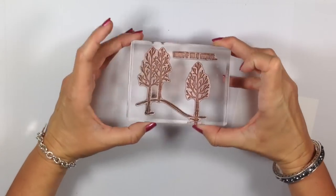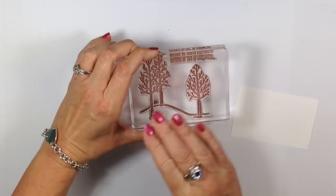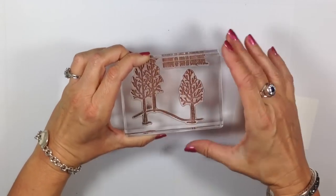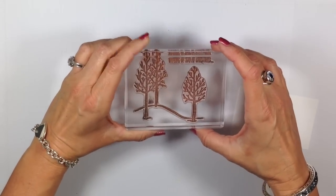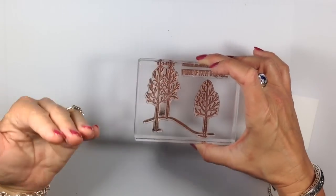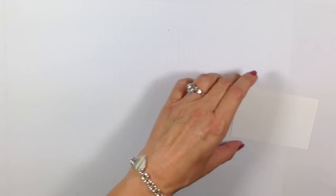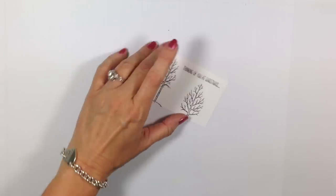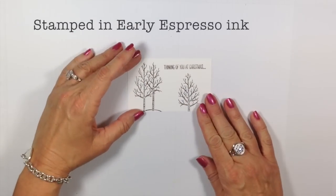I've mounted them on my clear block E. I've mounted it on there along with the 'thinking of you at Christmas.' I kind of shared how to do that in my previous video, the Now version, and I have stamped that on my cardstock so I'm all ready to go.